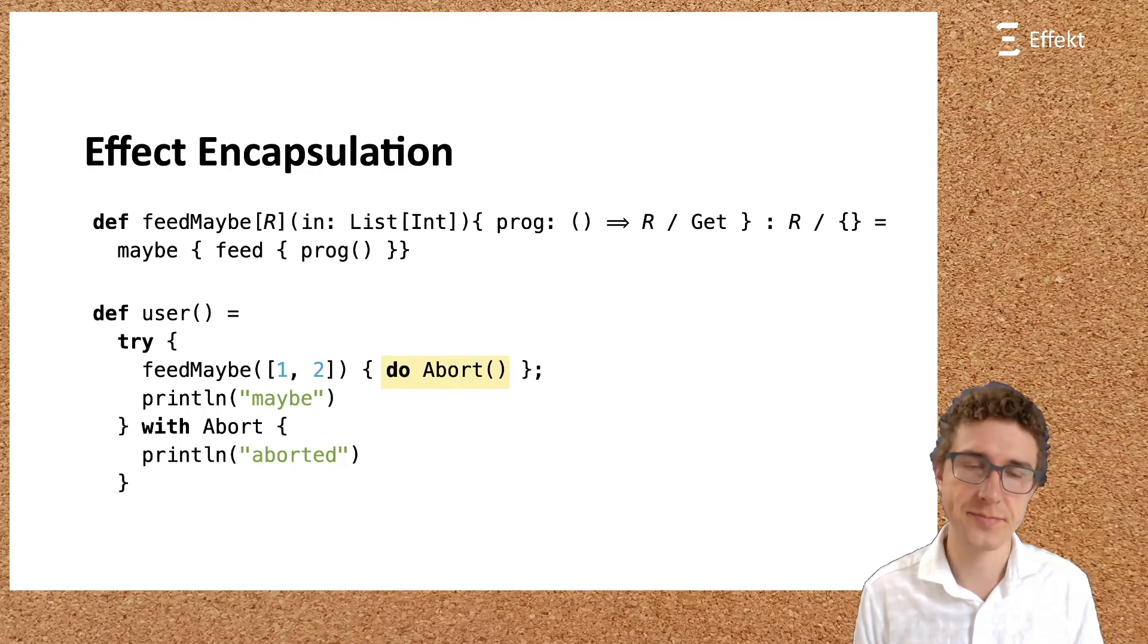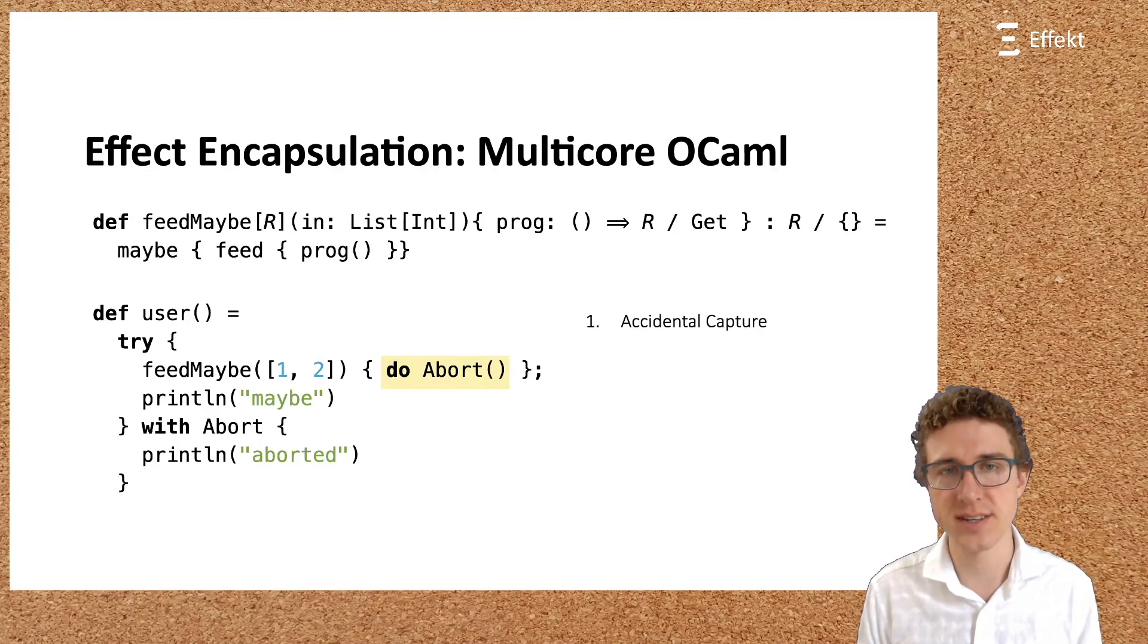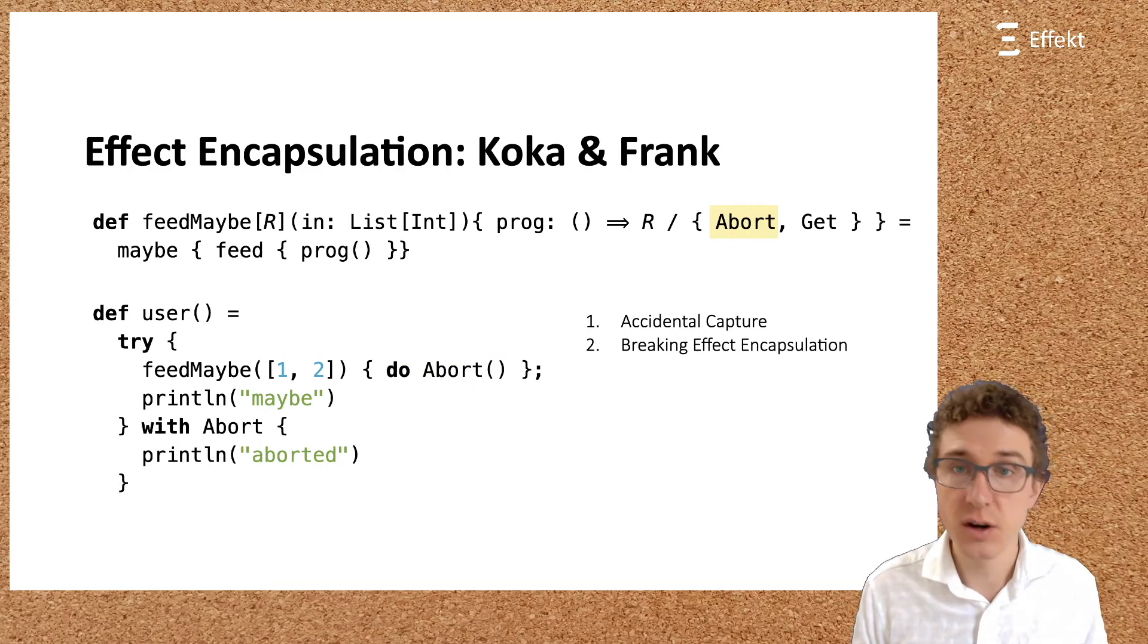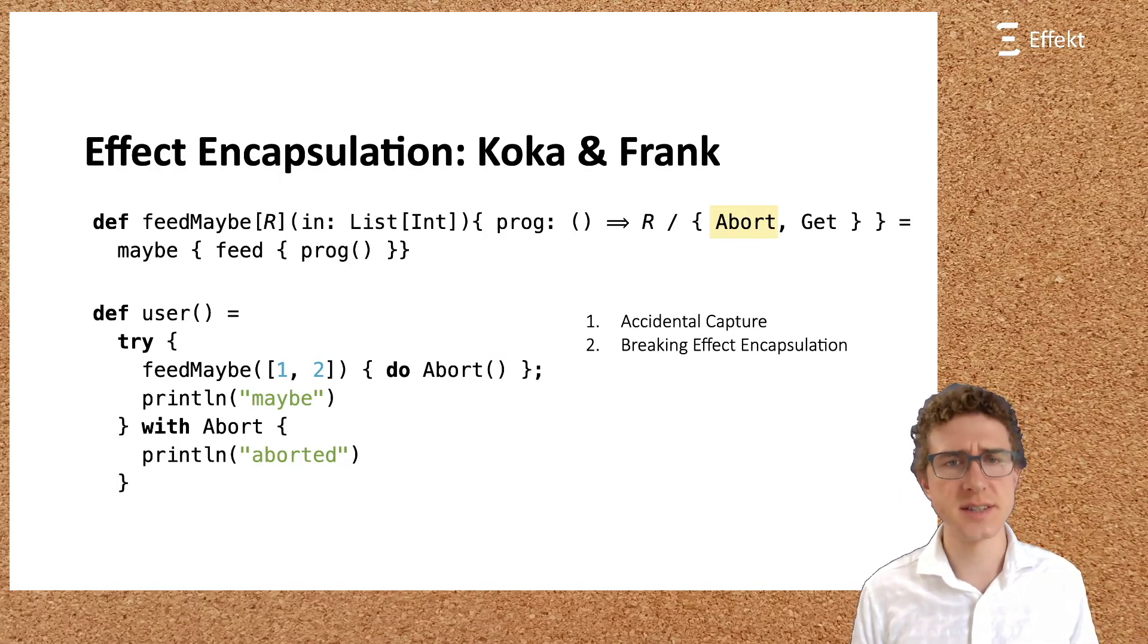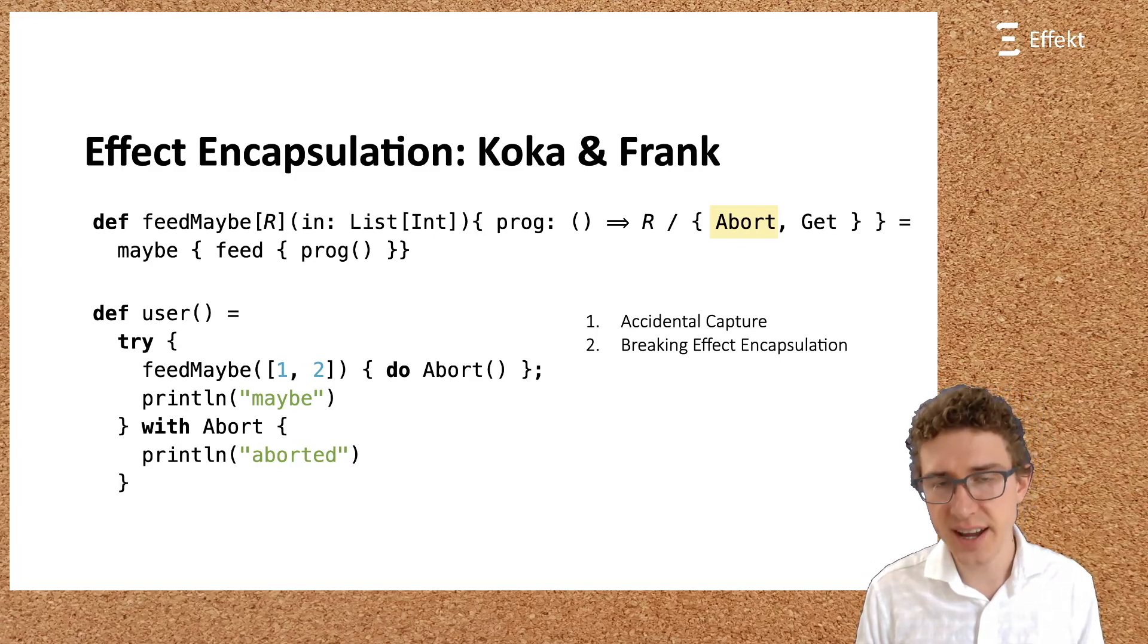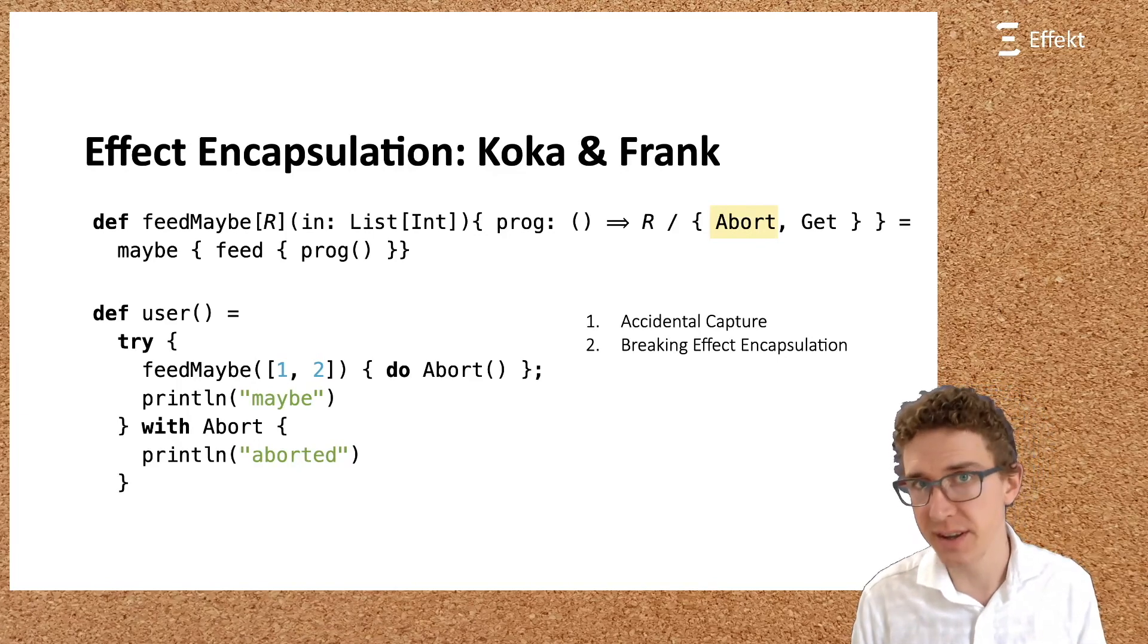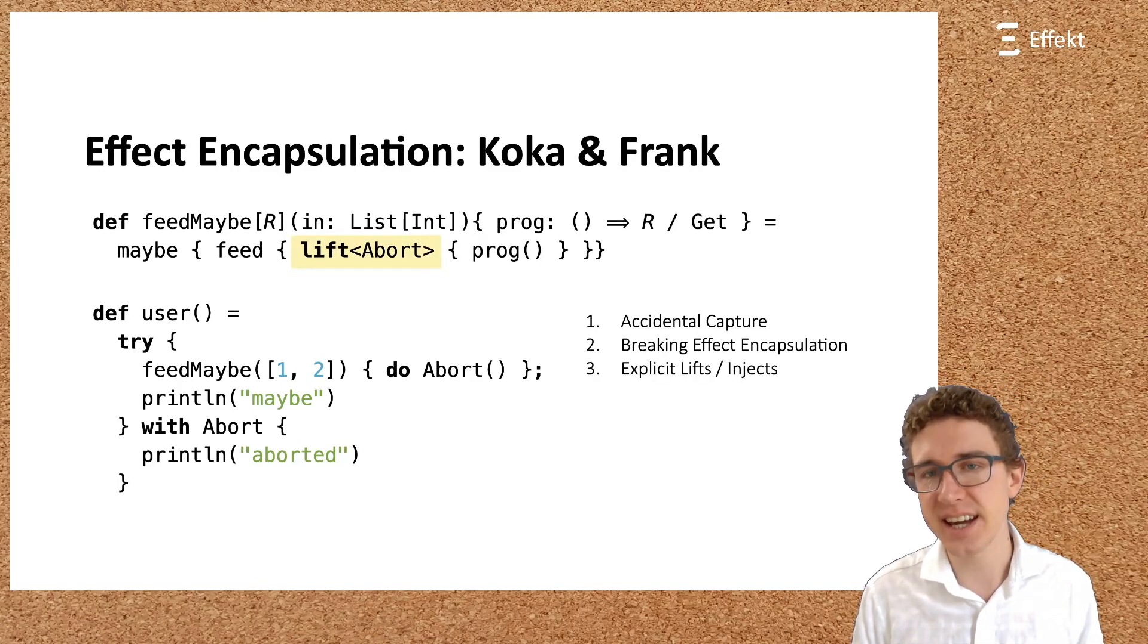First, in languages like Multicore or Camel, the abort effect would be handled by the maybe handler, and the result would yield maybe. In languages like COCA or Frank, the composed feed maybe handler would simply not type check. The inferred effect in COCA would mention the abort effect on PROC since it is used under a maybe handler. This correctly reflects the operational semantics of dynamic handler search, but leaks information into the type signature of feed maybe. It breaks effect encapsulation. In order to restore effect encapsulation, languages like COCA and Frank offer some form of term-level lifting annotation. In these languages, the lifting annotation indicates that any abort effect in PROC should be lifted over the next handler, that is maybe. As a result, the signature of PROC no longer mentions abort. Lifting has operational content since, when dynamically searching for the correct abort handler, lift informs the runtime that the next handler should be skipped.